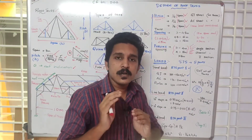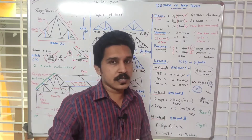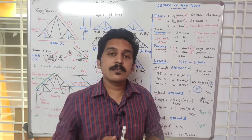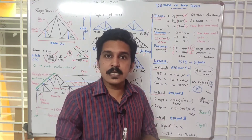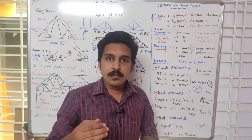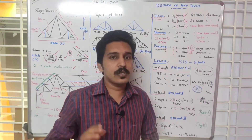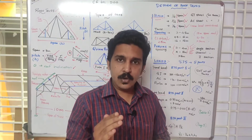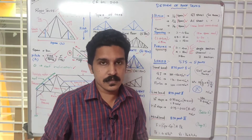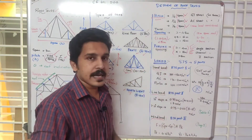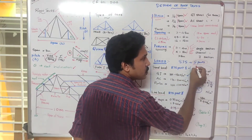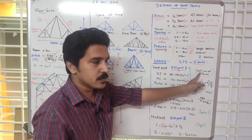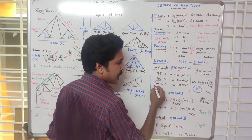For loads on the truss, we consider three main types: dead load (self-weight of members and roofing), live load (maintenance/moving load on the roof), and lateral loads such as wind load, earthquake, and snow. Wind load is the predominant lateral load and is calculated per IS 875 Part 3.